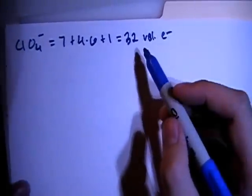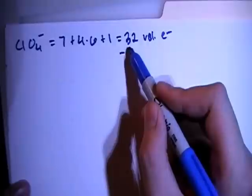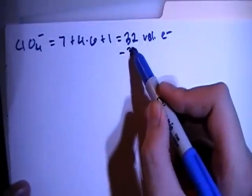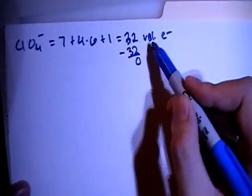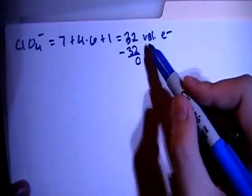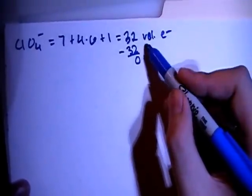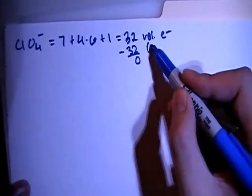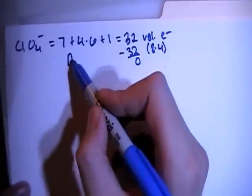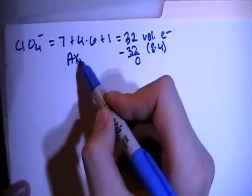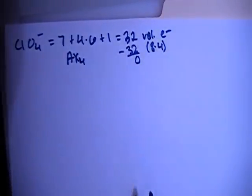We can subtract the largest multiple of 8 from our total, which is also going to be 32, which gives us 0 remaining electrons. And 32 is 8 times 4, so that means that this is going to be an AX4 compound.